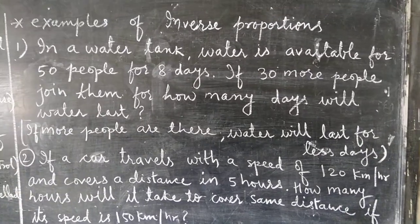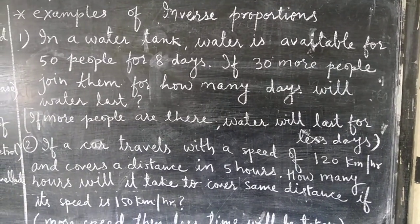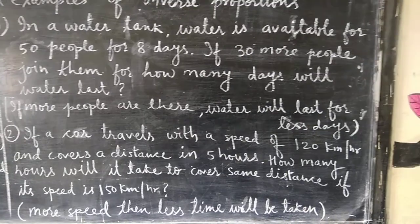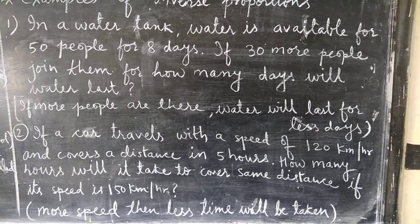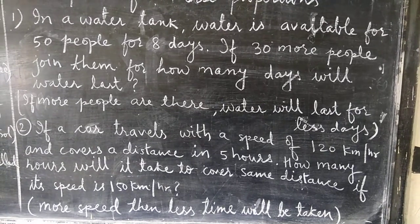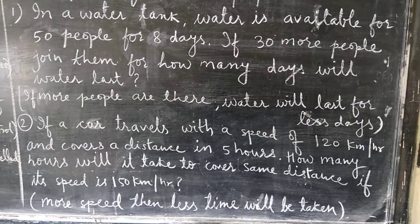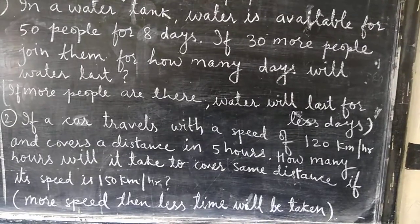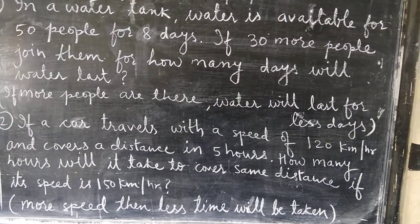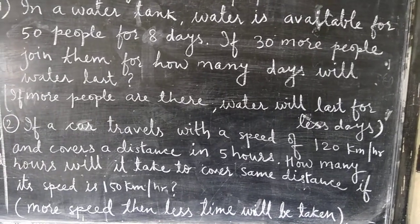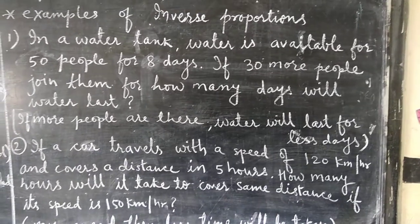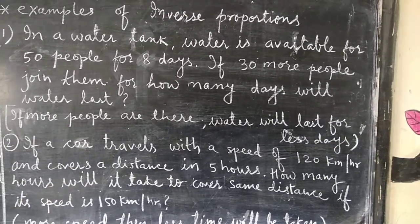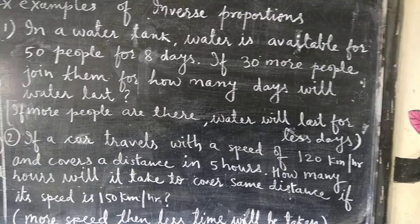In these two examples, one quantity is increasing and the other is decreasing, or if one quantity is decreasing the other is increasing. For example one: 50 people have water for 8 days, but 80 people means more people, so water is available for fewer days. For example two: speed is 120 and time taken is 5 hours; more speed means less time taken. So in such cases we say the quantities have inverse proportion — one is increasing, the other is decreasing, or one is decreasing, the other is increasing.